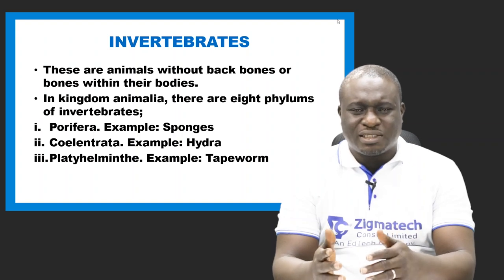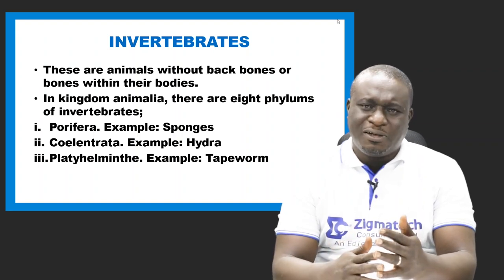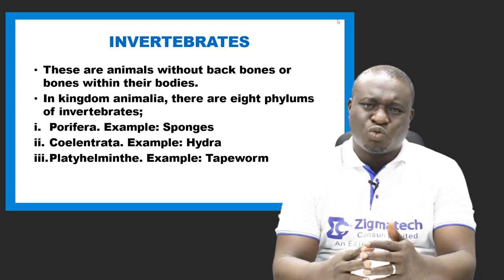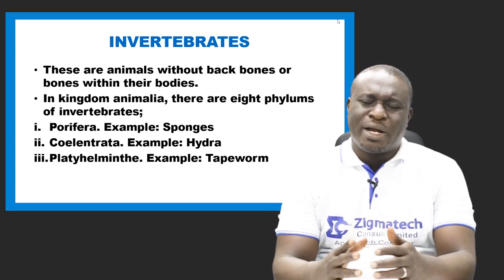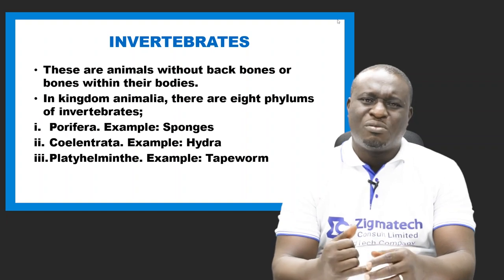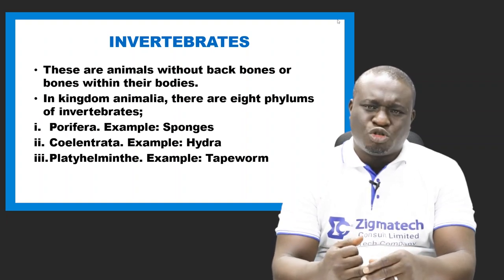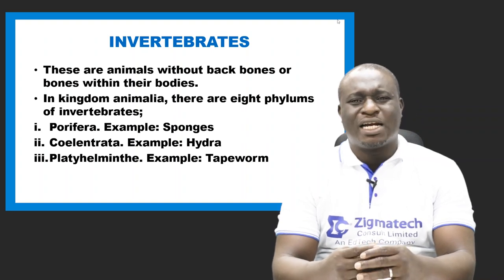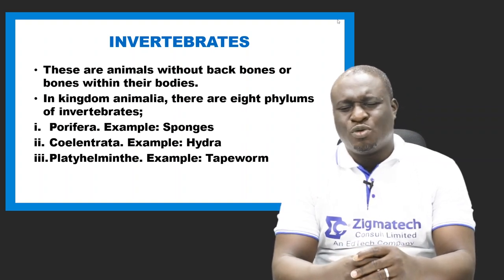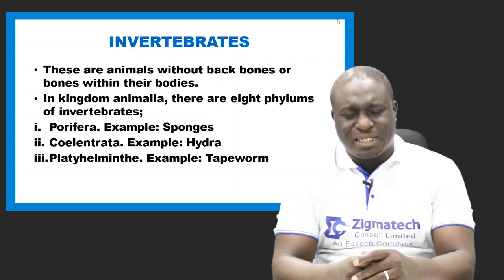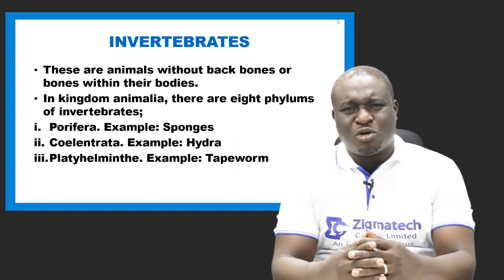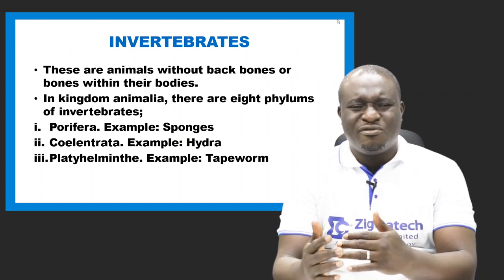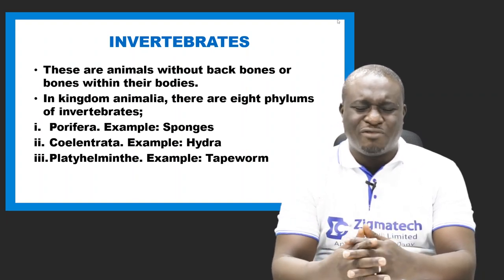Let me list out the first eight phyla of invertebrates. We have Porifera, Coelentrata, Platyhelminthes, Nematoda, Annelida, Mollusca, Arthropoda, and Echinodermata. The ninth one is Chordata, which is a vertebrate. Let's take a look at some examples found in each of these eight phyla of invertebrates.